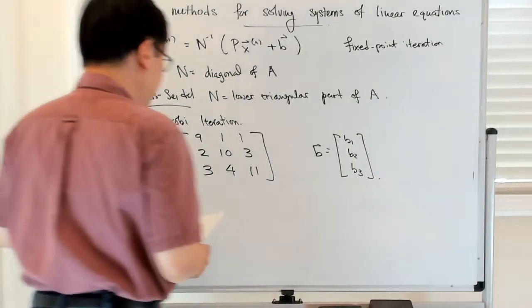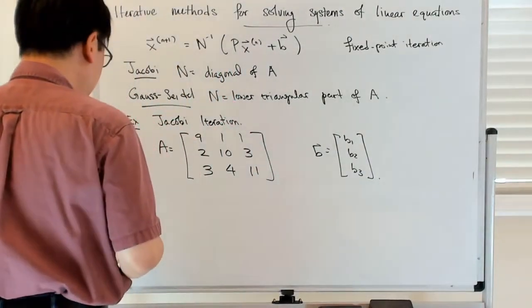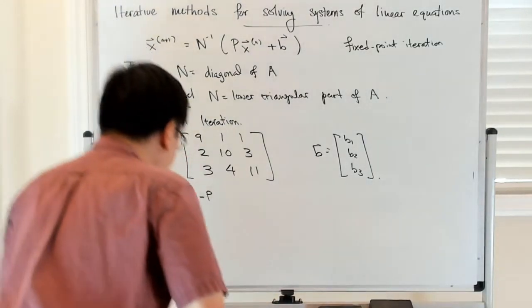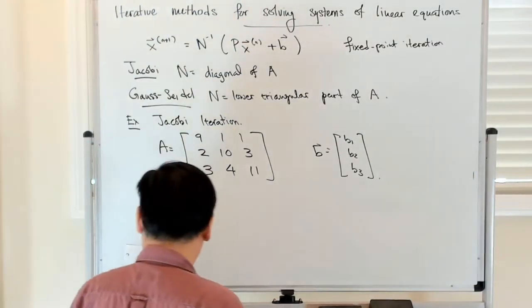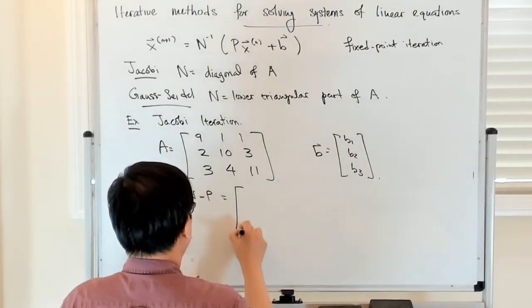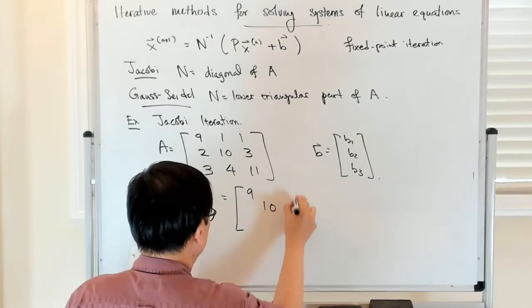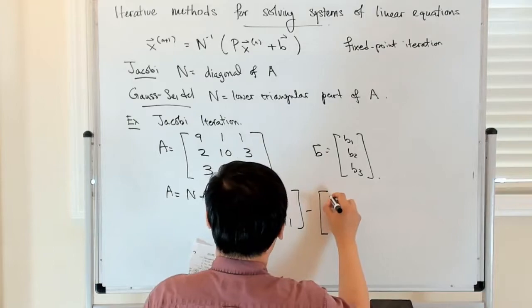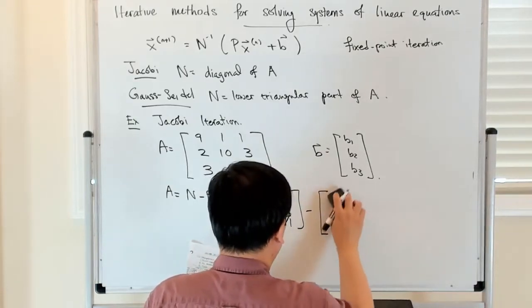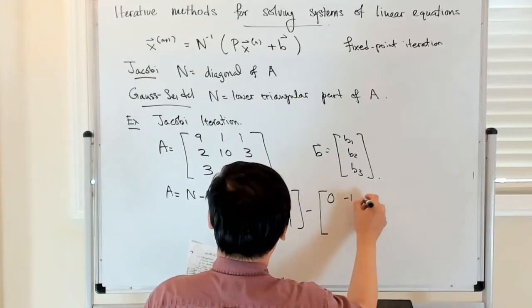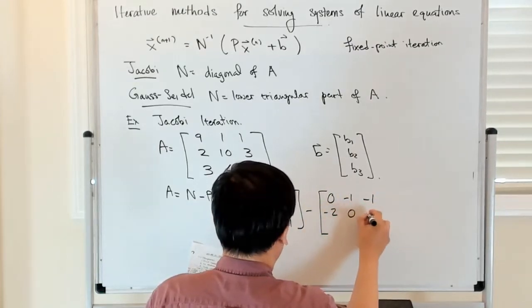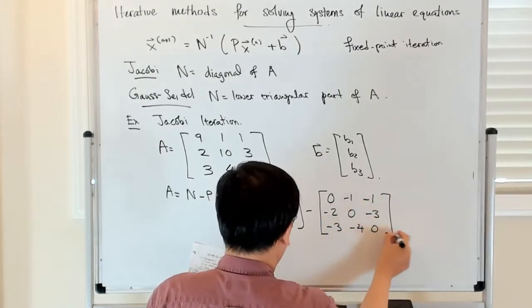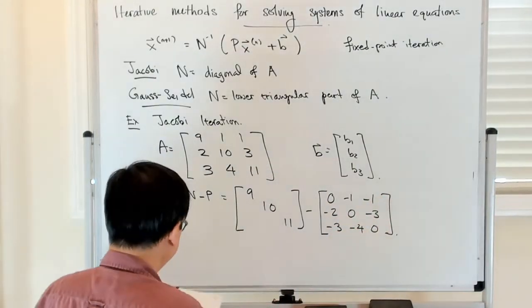So I'm going to write A as N minus P. This is going to be the diagonal [[9, 0, 0], [0, 10, 0], [0, 0, 11]] minus [[0, -1, -1], [-2, 0, -3], [-3, -4, 0]].